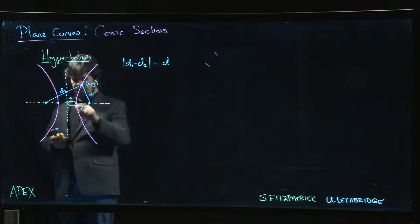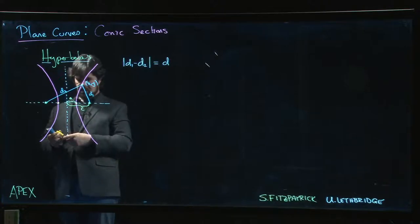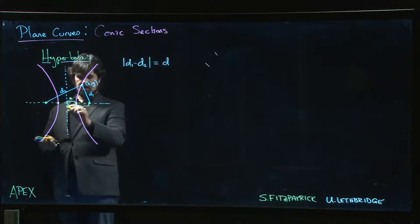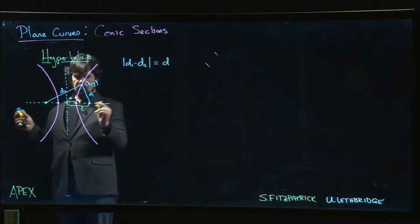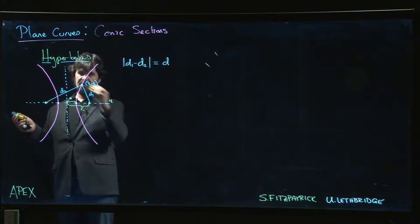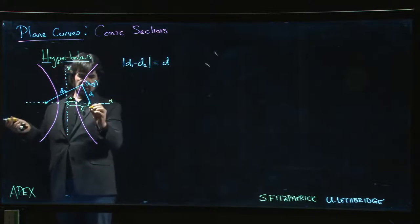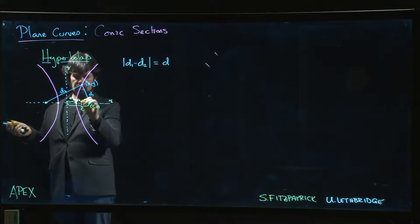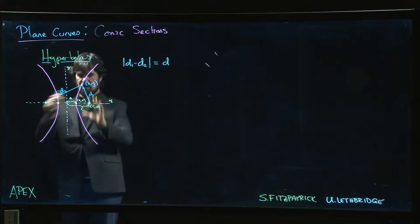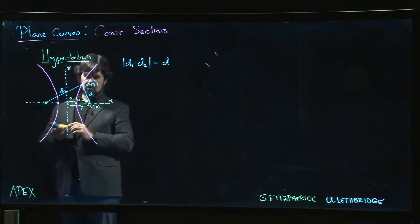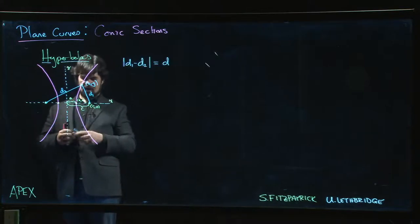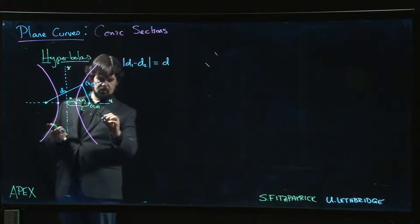We might as well make these two axes of symmetry the x-axis and the y-axis, so that this is now the point (c,0), and this is the point (a,0). Of course we can shift things around, but for now let's take those to be the x and y-axis. So if (x,y) is equal to just (a,0)...